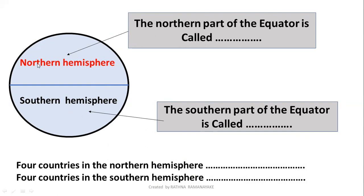Can you name several countries located in the northern hemisphere? There are also a number of countries in the southern hemisphere — Australia, New Zealand, Argentina, South Africa, and others. They are below the equator.